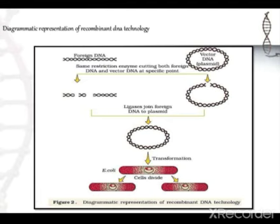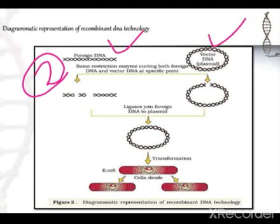The second step is cutting. We have to cut using the same restriction enzymes on both foreign DNA and vector DNA. We cut with restriction endonuclease enzyme and we get the resulting fragments. For the vector DNA, we cut the plasmid and we get the linearized plasmid.